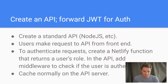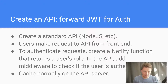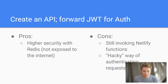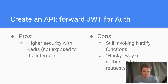Create an API for the JWT for authentication with Netlify. Use a standard API — users can make requests directly to the API from the front end. To authenticate requests, you create a Netlify function that returns the user's role, and the API checks if the user is authenticated. Then you just cache normally on the API server. Pro: higher security with Redis, since Redis is not designed to be exposed to the internet, so keeping it local and accessible only via localhost is better. Cons: you're still invoking Netlify functions, and it's a hacky way to authenticate requests.